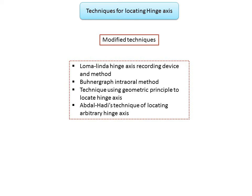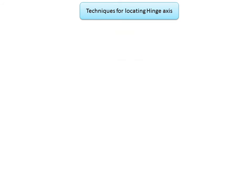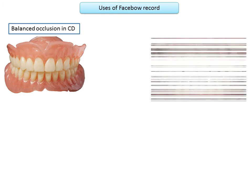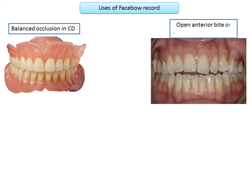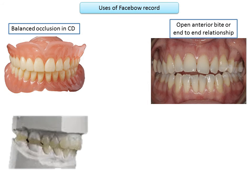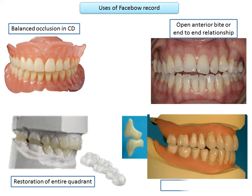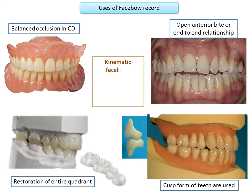Now let's look at the clinical indications for using a facebow record: for obtaining balanced occlusion while fabricating complete dentures, and when balanced occlusion in the eccentric position is desired; in Class I and Class II cases with open anterior bite or end-to-end relationship; for segmental correction; when the entire quadrant is to be restored; when a definite cusp-fossa or cusp tip-to-tip inclined relation is desired; or when using cusp form of teeth in complete dentures. Kinematic facebow is used when precise reproduction of the exact opening and closing of the mandible is required.